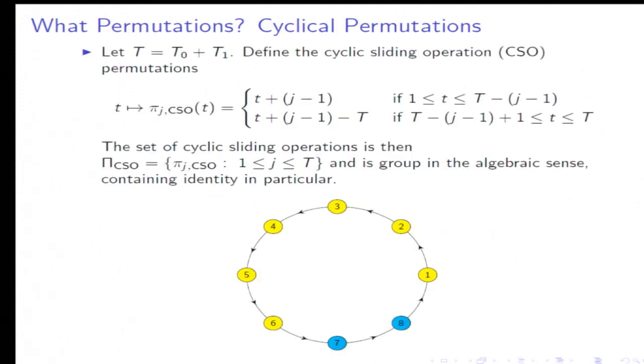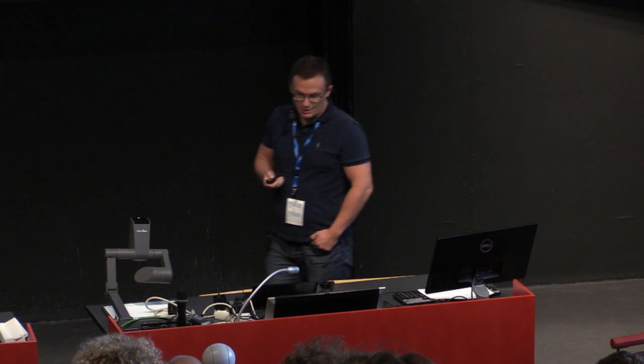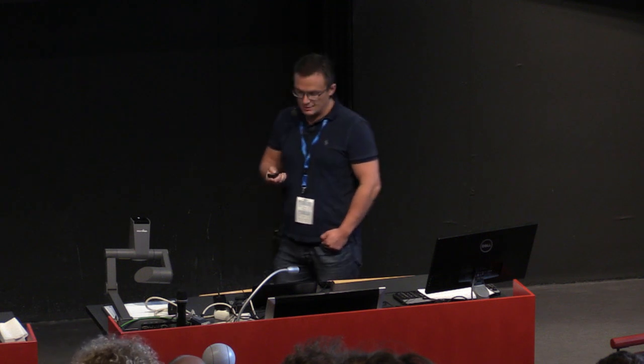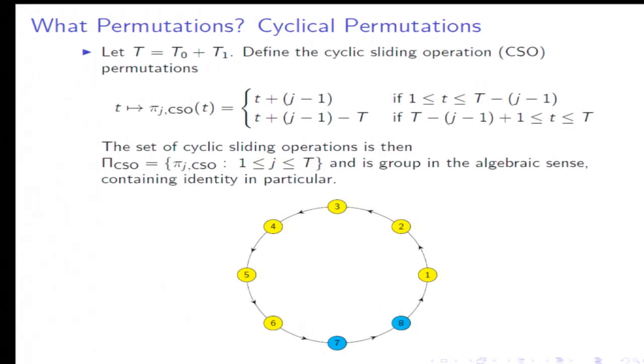The key question is which permutations should we consider. At least we're going to consider permutations that partly preserve dependencies in the data. One set of permutations are going to be cyclical permutations. You can arrange the observation numbers in a circle and basically each permutation moves you along the circle. So like observation number 8 becomes number 1 in the first permutation, in the second it becomes number 2 and so on.